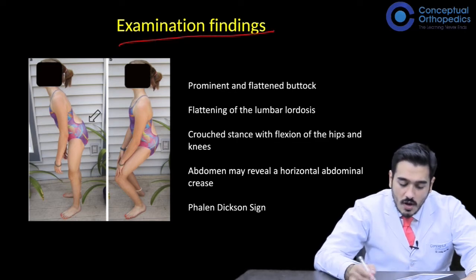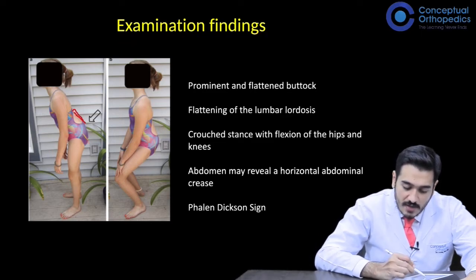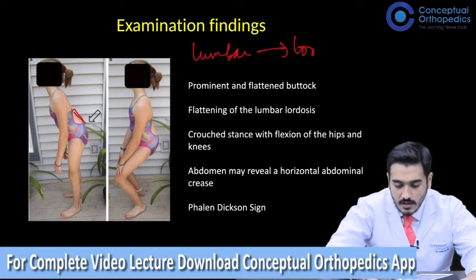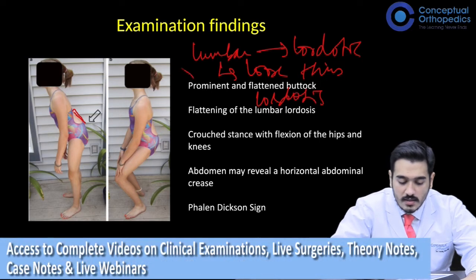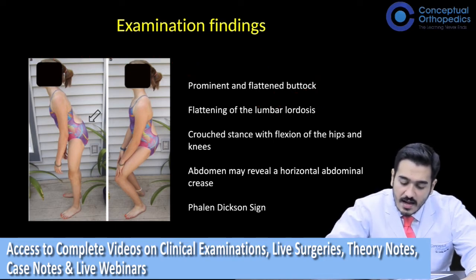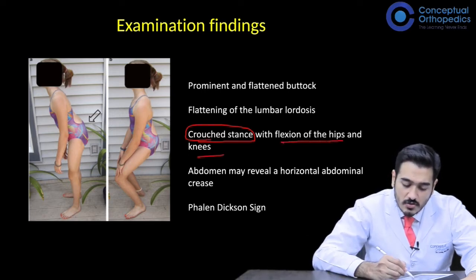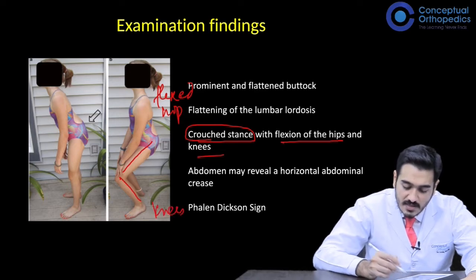On clinical examination you have to look out for flattened buttocks and flattening of the lumbar spine. Normally the lumbar spine is lordotic and we lose this lordosis. In cases of spondylolisthesis there is a crouched stance — that is flexion of the hip and knees. As we see here, this child has flexed the hip joints and flexed the knees.